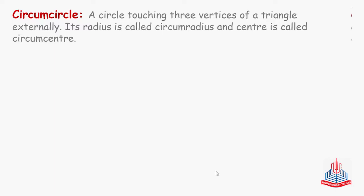The next circle is the circumcircle — a circle touching three vertices of a triangle externally. Its radius is called circumradius and its center is called circumcenter. A circle that passes through all three vertices of a triangle is called a circumcircle. The word 'externally' is used here, but actually, a circle touching all three vertices can only be drawn outside the triangle, so it will always be a circle surrounding the triangle.